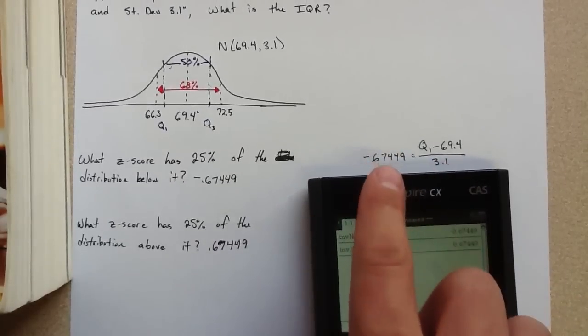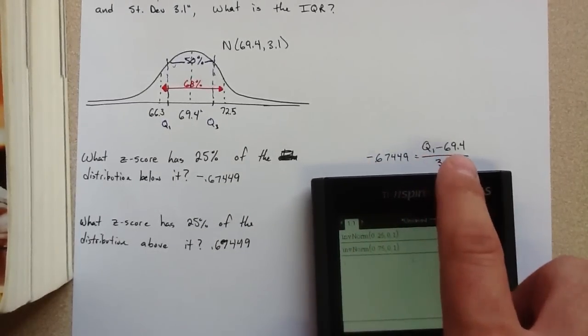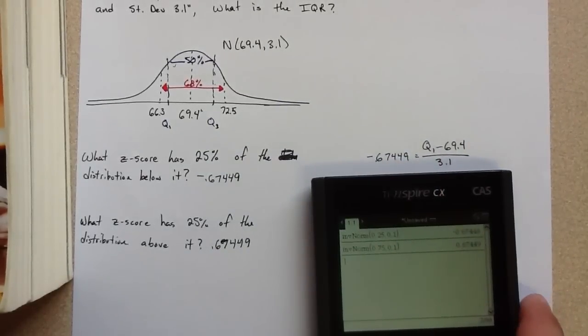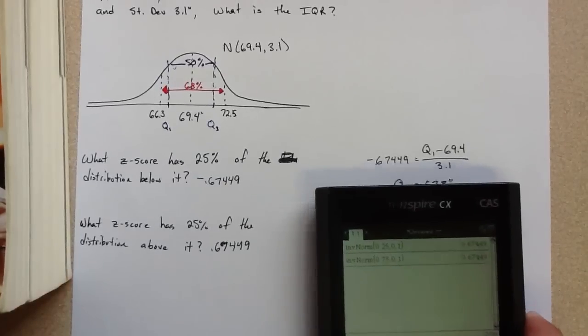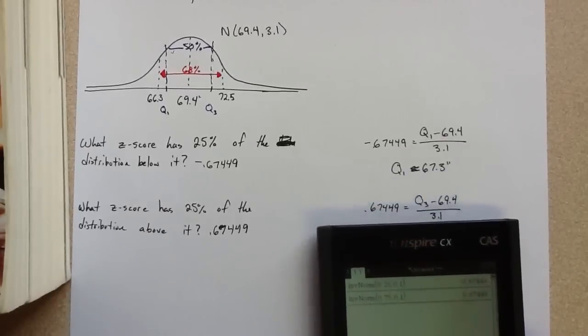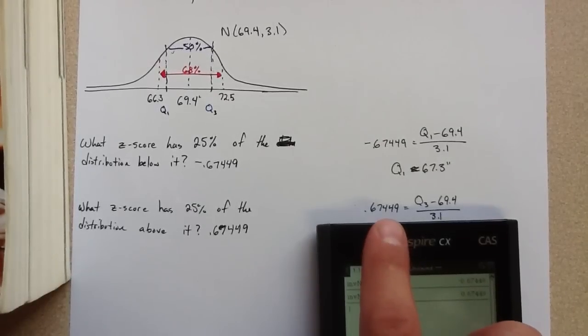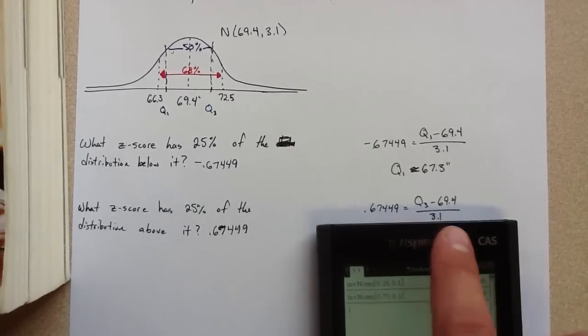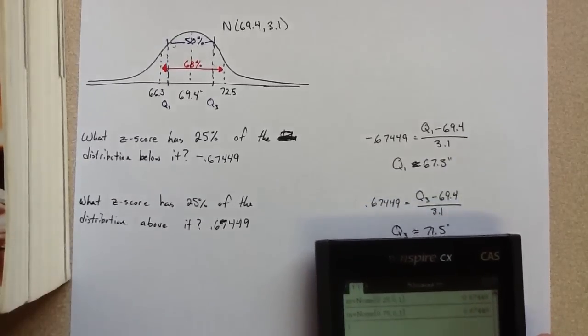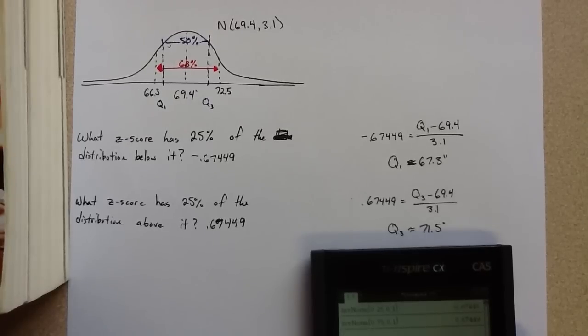So we're looking at the z-score and the z-score formula. The data point of interest minus the mean divided by the standard deviation equals the z-score. So we set that up to solve for Q1, and we would get 67.3, approximately 67.3 inches, and a similar formula to solve for Q3. The z-score for 25% of the data above it, or distribution above it, and then Q3 minus the mean divided by the standard deviation is equal to that. So we get about 71.5 inches.